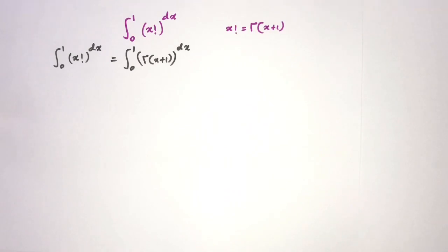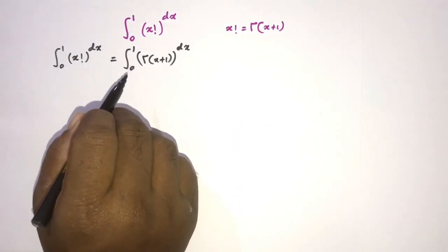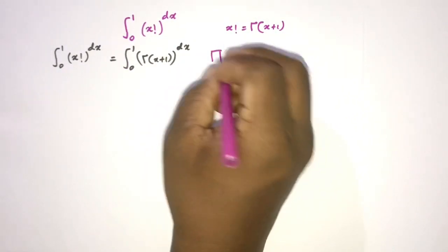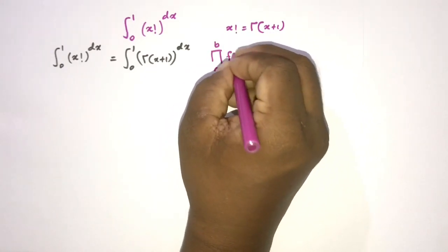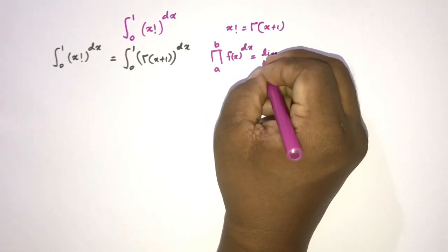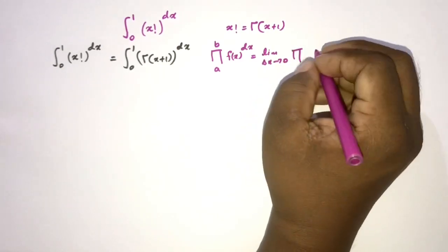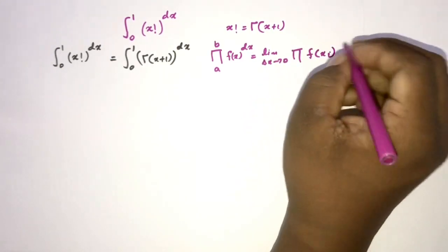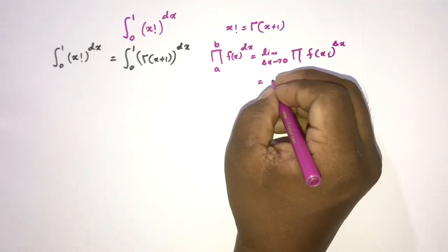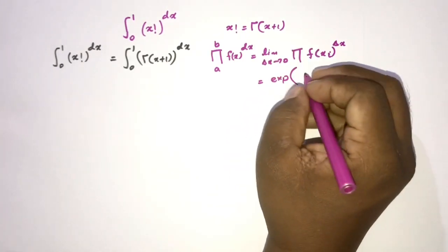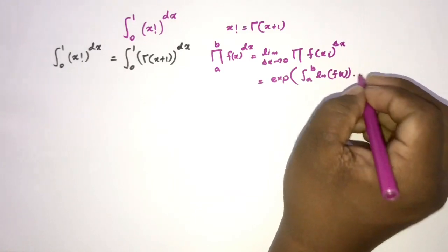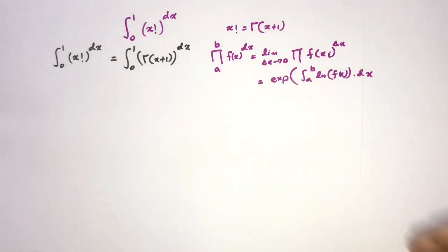This is a Type 2 product integral, also called a geometric integral. The formula for the Type 2 product integral, capital Phi, from a to b of f(x) raised to dx, is defined as the limit as delta x approaches 0 of the product of f(x_i) raised to delta x, which is also equal to exp of the integral from a to b of the natural log of f(x) dx.